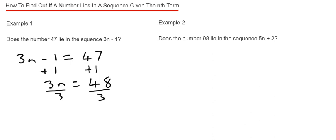That will give us n equals 16. So this is telling me that 47 is the 16th number in the number sequence. So since this number is a whole number, then definitely 47 will be in the number sequence.